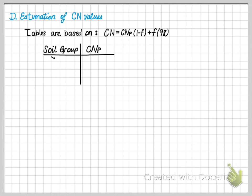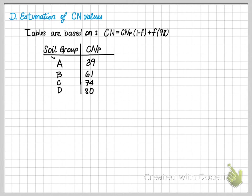Next, how do you estimate the CN value? Table 3.18 is based on the following equation, where the curve number equals CNP times (1 minus F) plus F times 98. The CNP varies based on soil groups as shown in the table. F is the fraction of imperviousness.